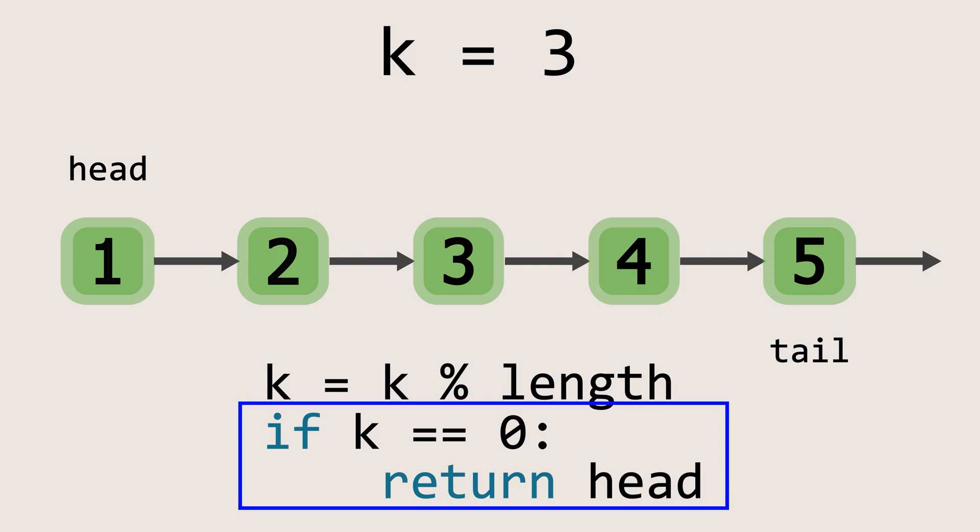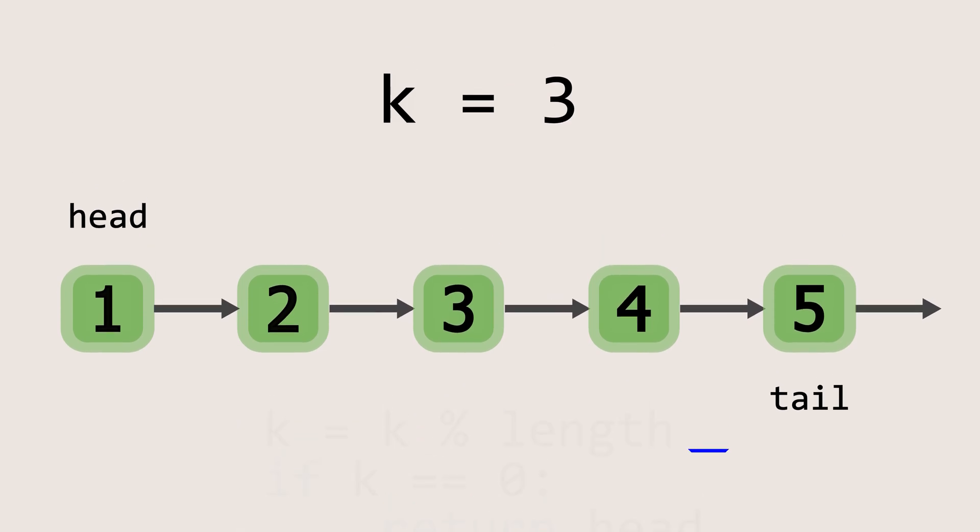However, since k is not 0 in our case, we proceed to the next step. Now that we know we need to shift the last 3 elements to the front, the next step is to locate the element just before the part we want to move.